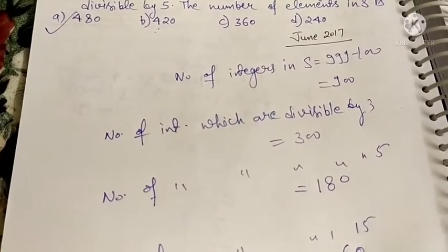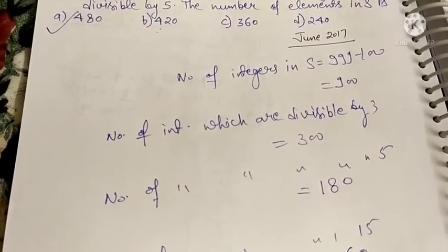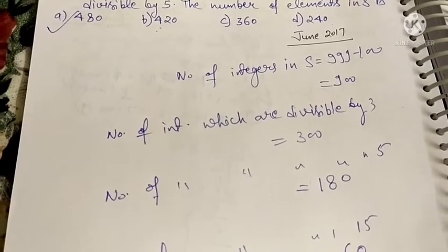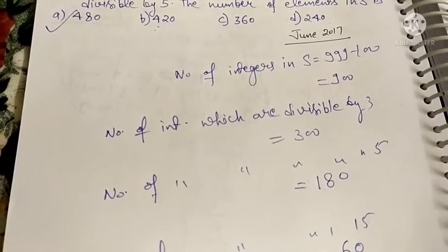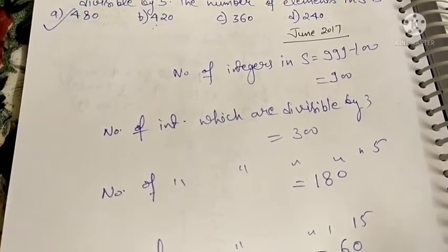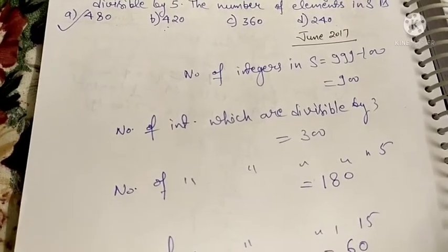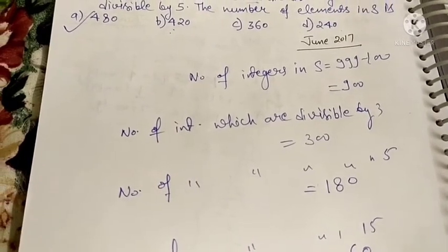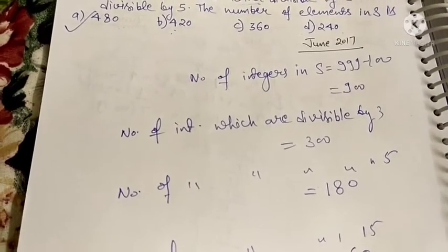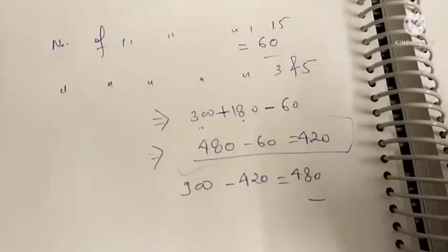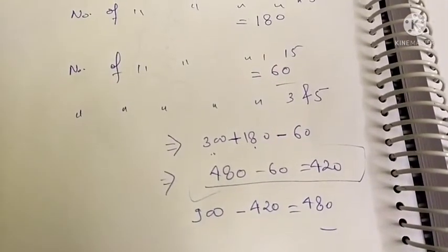Using 3, 5, and 15 — we add the counts for divisible by 3 and divisible by 5, then subtract divisible by 15, because we need integers not divisible by 3 nor by 5. We subtract this from 900, and this is our answer. Thanks for watching this video.